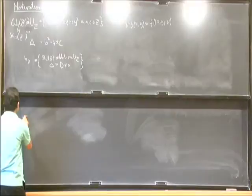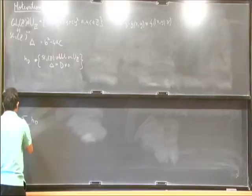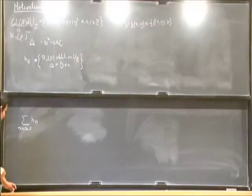For instance in the negative discriminant case, suppose we sum h_d as d goes from -x to 0. What is this, how does this grow as a function of x?